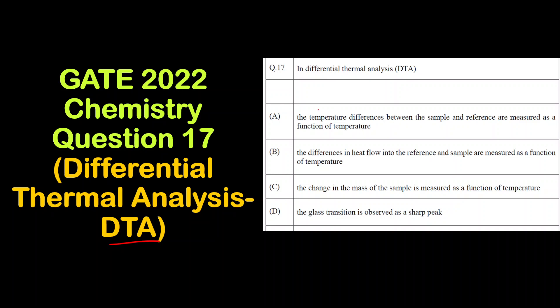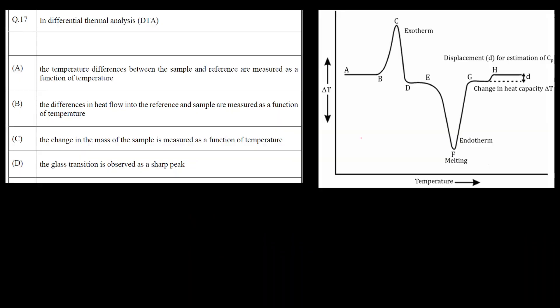What is the question? In DTA, what do we measure? That is, the plot, what is present on the y-axis and what is present on the x-axis. The different options are given.